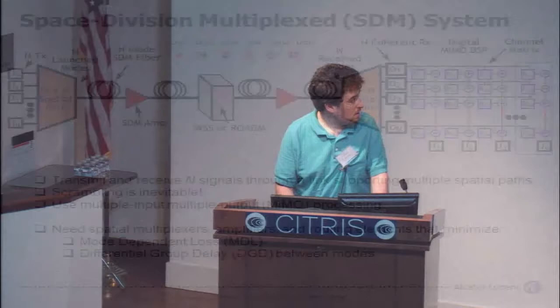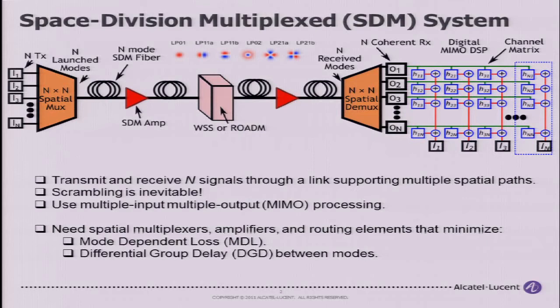In a space division link, we aim to increase the capacity by the number of modes. The link consists of many components. First, we need to get the end data signals onto the link using a spatial multiplexer. We must transmit down some fiber that supports multiple modes or multiple spatial paths, amplify all these modes, and then route these modes too.